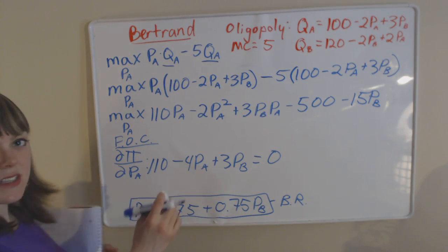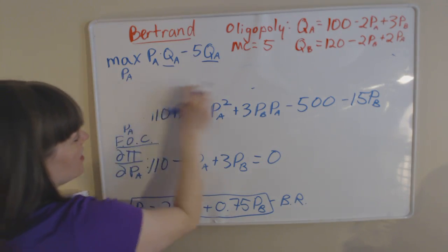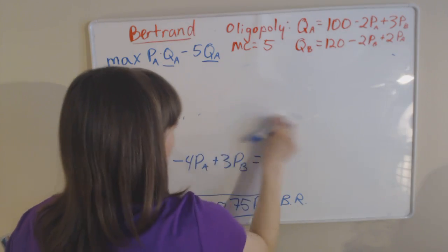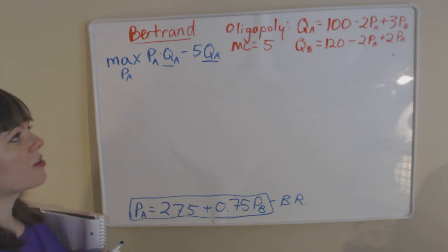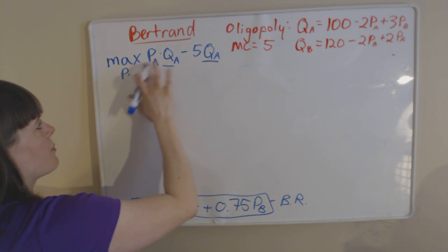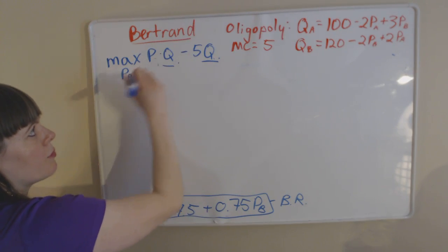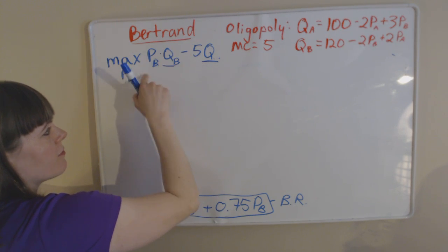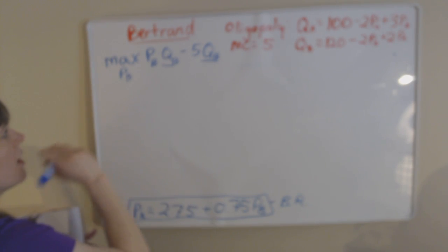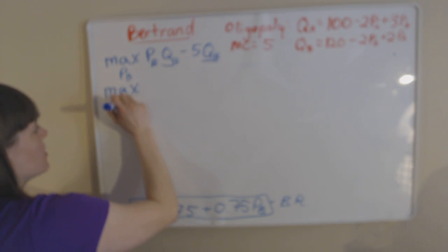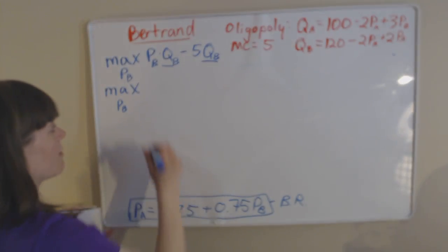Now let's go back and do firm B's maximization problem, using the exact same process as for firm A. We're solving these separately — we're not plugging anything in like we do in a price leadership situation. So firm B's maximization problem: PB will be our choice variable and profit equals price of firm B times quantity of firm B minus marginal cost times quantity of firm B. The next step is to plug in the quantity from firm B's demand function.